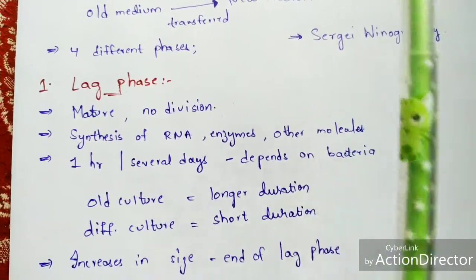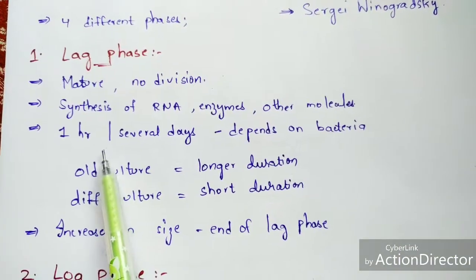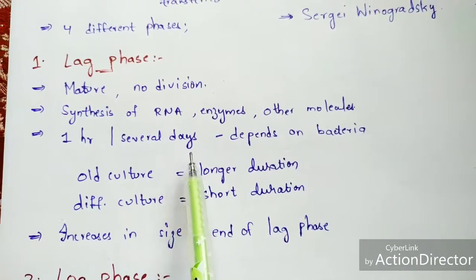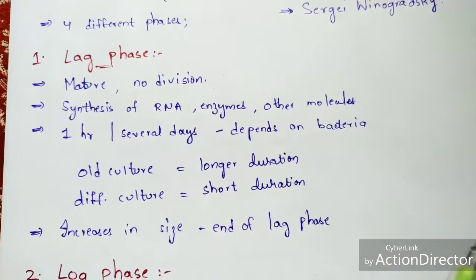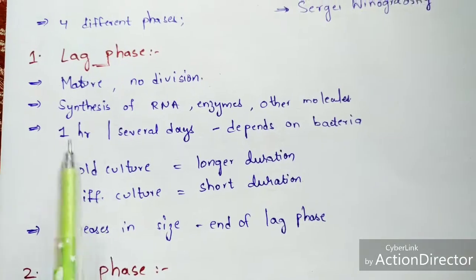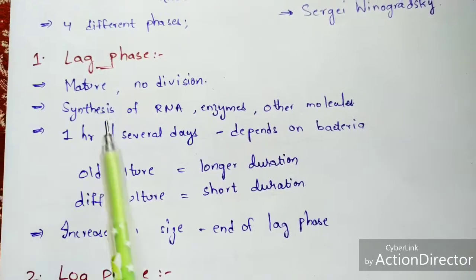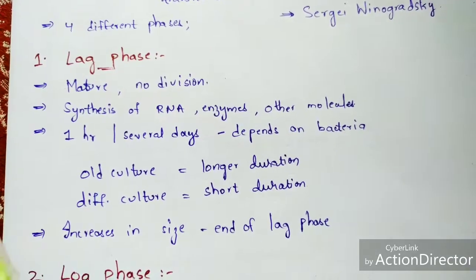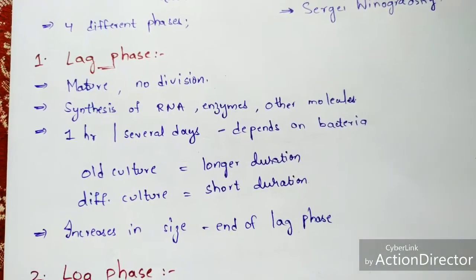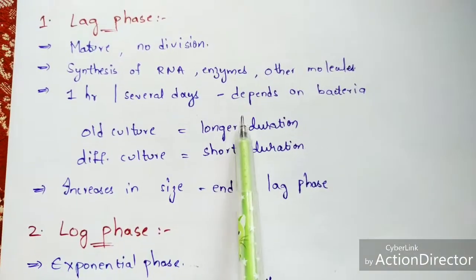The duration of the lag phase depends upon the type of bacteria introduced into the sterilized medium. If you take bacteria from an older culture medium, the duration will be long; if taken from a different culture, the time duration is shorter. The key point to remember is that the cell increases in size only — it does not divide during the lag phase.